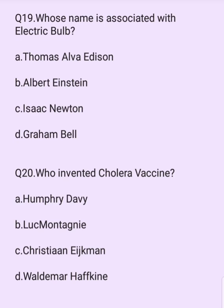Whose name is associated with the electric bulb? Options are: Thomas Alva Edison, Albert Einstein, Isaac Newton, Graham Bell. The answer is option A: Thomas Alva Edison.